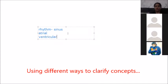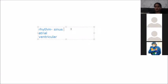Normal sinus rhythm means that every P wave precedes the QRS complex, and the P to QRS ratio is one to one. The distance between consecutive P waves and between consecutive R waves should remain constant on the ECG strip.